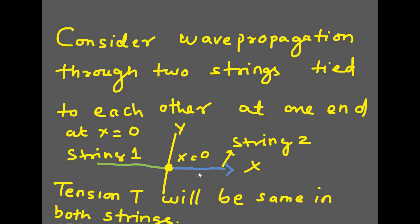Once you try to analyze the wave propagation in a string, suppose you shake the string, there will be an incident wave. Due to that incident wave, there will be either a reflected wave or a transmitted wave or both.